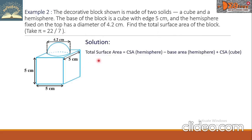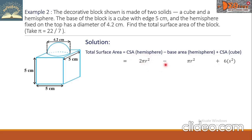The total surface area required equals the CSA of the hemisphere minus the base area of the hemisphere, plus the CSA of the cube. The formulas are: CSA of hemisphere is 2πr², minus base area (circle) πr², plus 6s² for the cube's CSA.